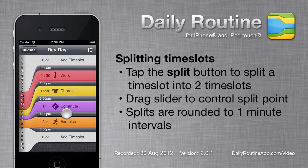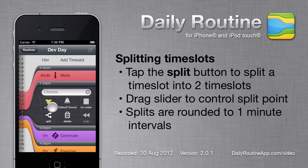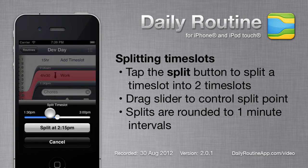Just as we can merge two timeslots into one, we can split one timeslot into two using the Split button. By default, the split will be in the middle of the timeslot, but we can change this by dragging the slider.